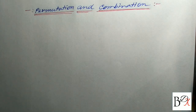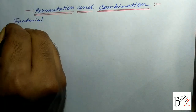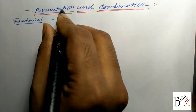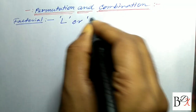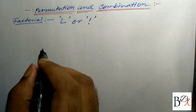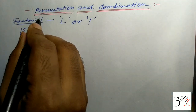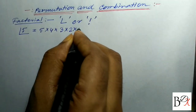Before starting this new topic we have to know a term that is factorial. Factorial is denoted by the sign '!' Suppose I am doing factorial 5. Factorial 5 is equal to 5 into 4 into 3 into 2 into 1.